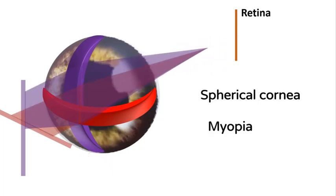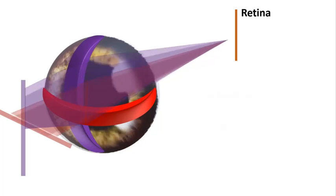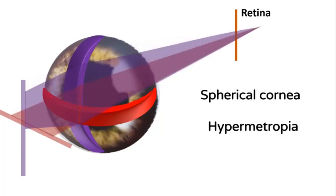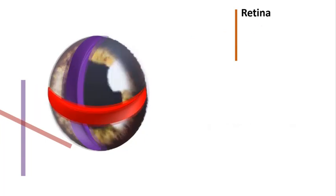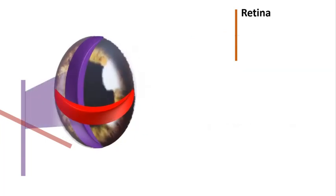Here, rays from both vertical and horizontal meridians focus at the same point but in front of the retina, so this is myopia. Here again, both meridians focus at the same point but behind the retina, so this is hypermetropia.